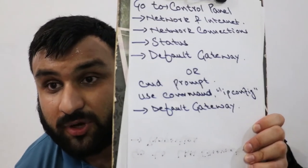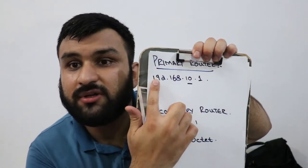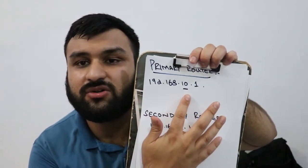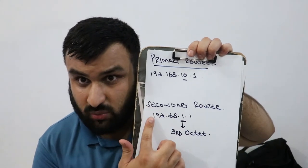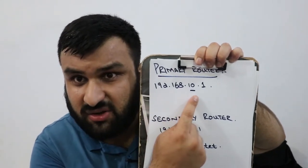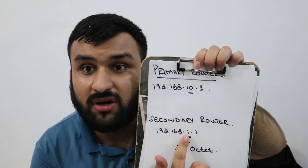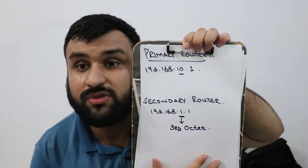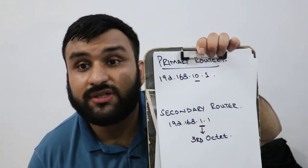Make sure to do that for both your primary and secondary routers. In my case, it's 192.168.10.1 for the primary router and 192.168.1.1 for the secondary router. Notice that this is called the third octet — we have to make sure the third octet is the same on both routers, otherwise we won't be able to connect them together.